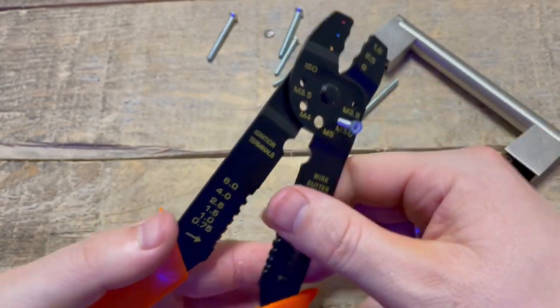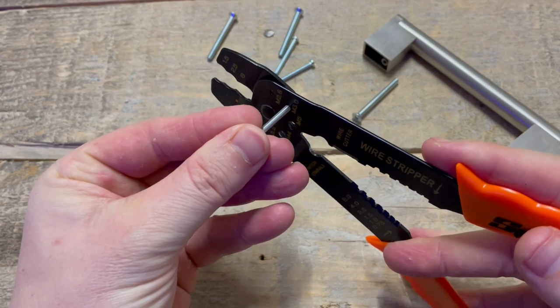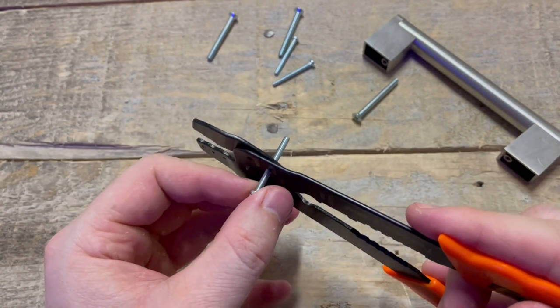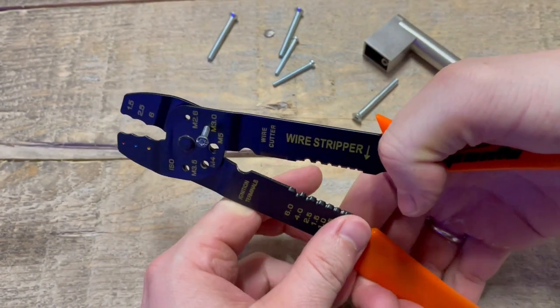So basically just insert your bolt in there. For the purpose of this demonstration I will cut it in half. Apply pressure right here on this wire stripper handle.